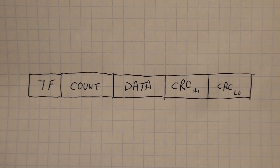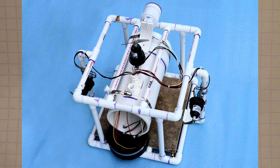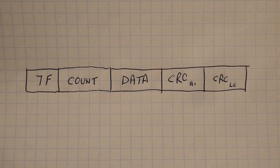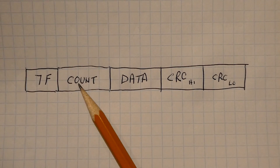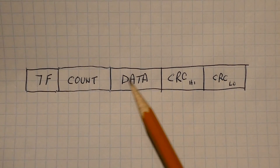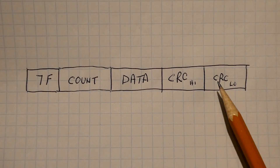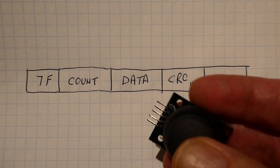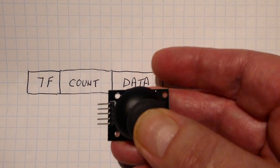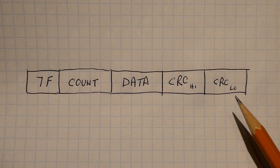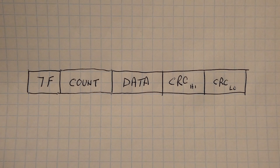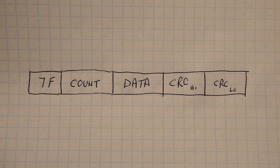Let's say we have an ROV — a remotely operated underwater vehicle — that we want to control using RS-485 with a hundred-foot tethered line. We could use a simple packet protocol like this: the first byte is 0x7F as the start byte, then a count byte indicating how many bytes are in the data field, followed by the data field itself, then CRC high and CRC low bytes. The data field could contain joystick data to control the thrusters, streamed continuously to the ROV.